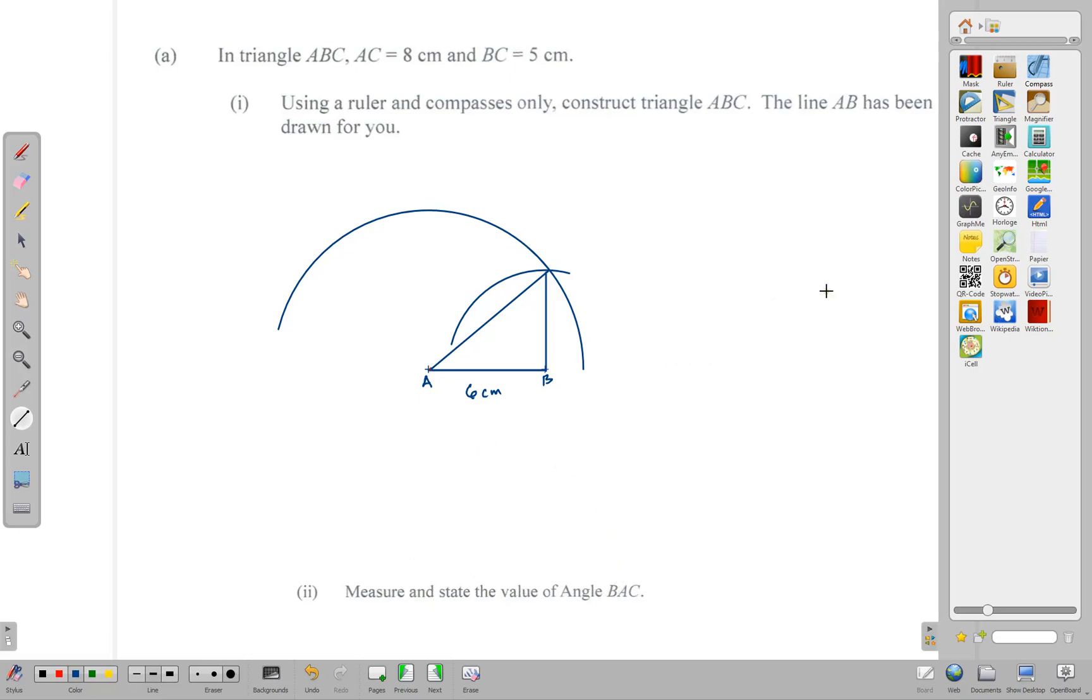Now once you've done that, that's the end of the construction. We need to measure and state the value of angle BAC. So to do that you need to grab a protractor and measure the size of angle BAC. You should be able to use a protractor. You notice that the size of angle BAC is 40 degrees.